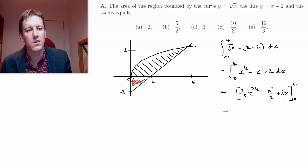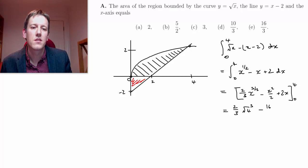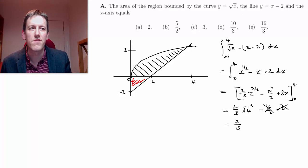And we're integrating that between 0 and 4. Obviously we just get 0 for the 0's here, so I've just got to plug 4 in. So 2 thirds times 4 to the 3 over 2, so that's the square root of 4 cubed, minus 16 over 2, plus 8. So I've got here minus 8, plus 8, so they cancel out. So I've just got 2 thirds times the square root of 4 cubed, so 2 thirds times 8, which is 16 over 3.